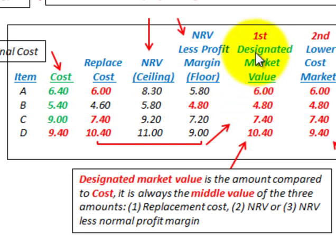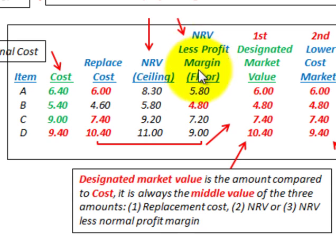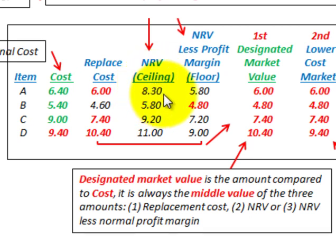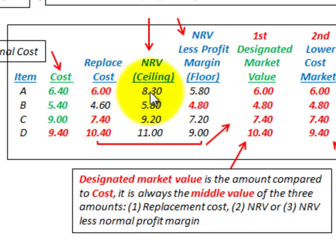For item A, we determine the designated market value by looking at the replacement cost, the net realizable ceiling, and the floor amount, then taking the middle value. The high value for item A was $8.30 (the ceiling), and the low value was $5.80 (the floor). Our middle value is the replacement cost at $6.00, which falls between $8.30 and $5.80. So $6.00 becomes the designated market value for item A.